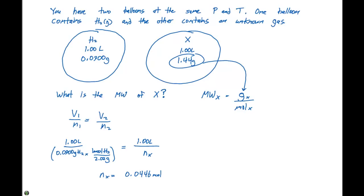We did that by doing a cross multiplication here. So we have 1.00 liter times 0.0900 grams of H2 times one mole of H2 divided by 2.02 grams. So our grams of H2 are going to cancel out. We're left with moles here. That's going to equal 1.00 liters times NX. There's 1.0 liter on each side, so they're going to cancel out. We take 0.0900 divided by 2.02 and we end up getting 0.0446 moles of our gas X.